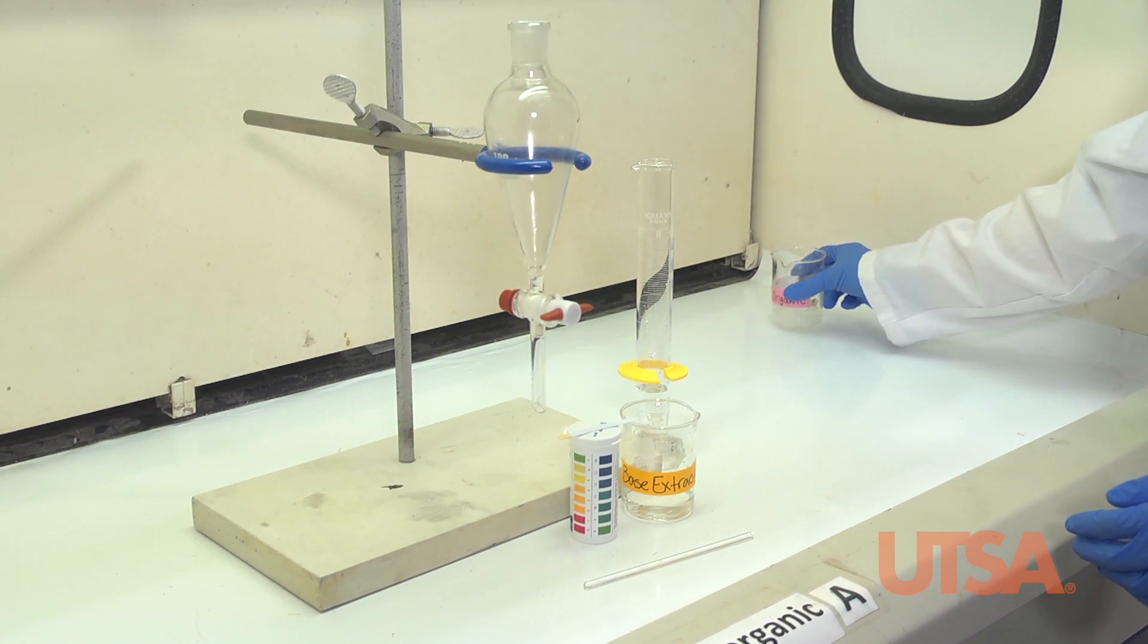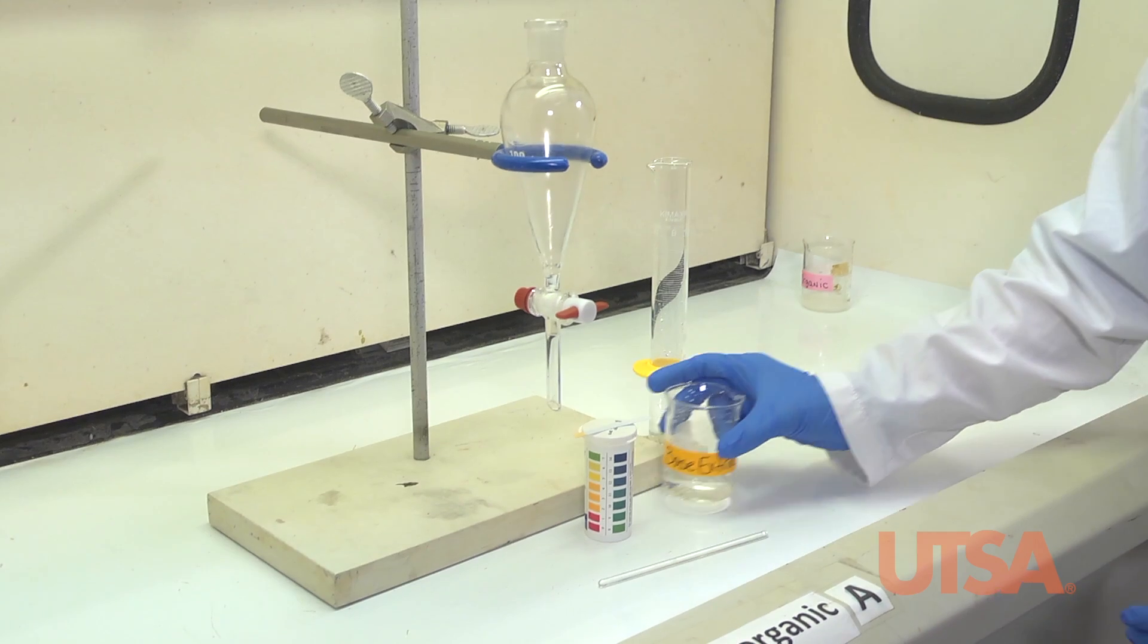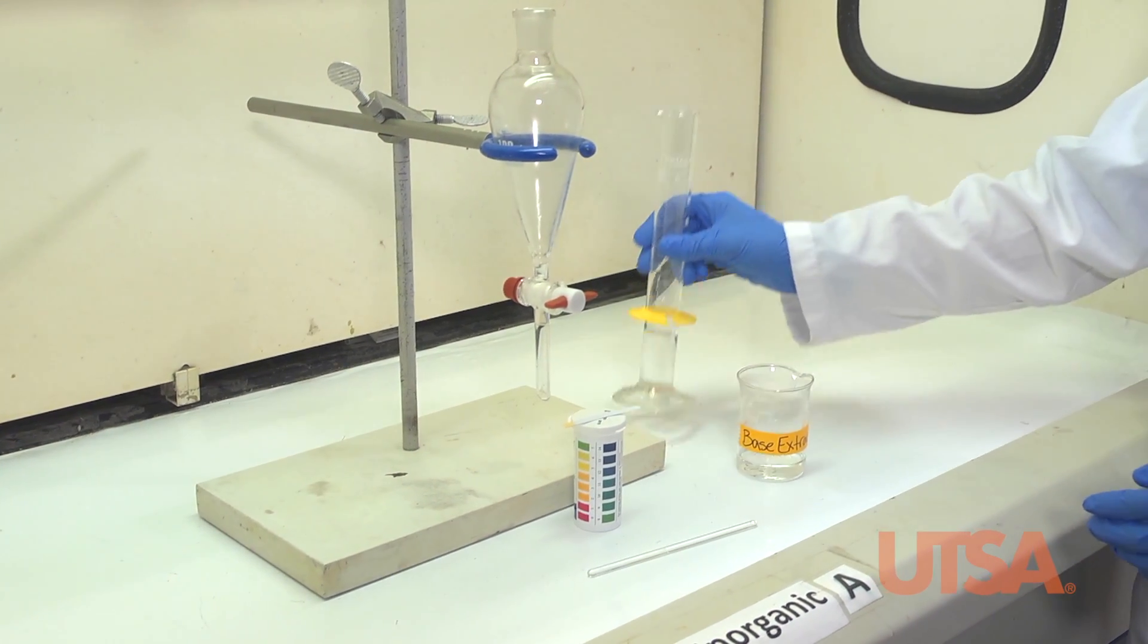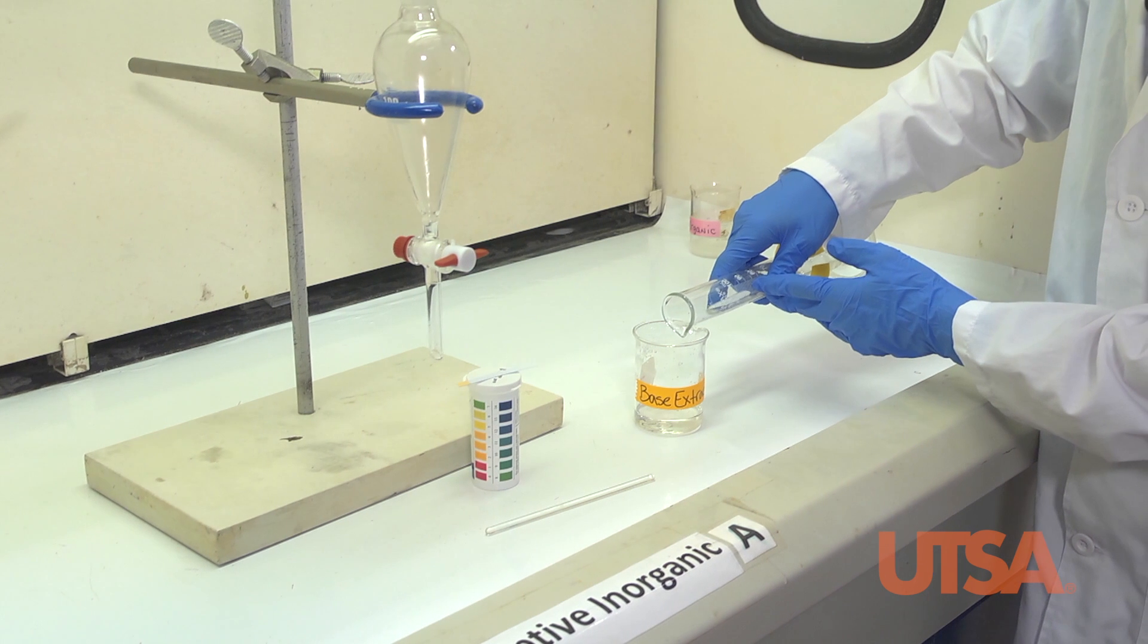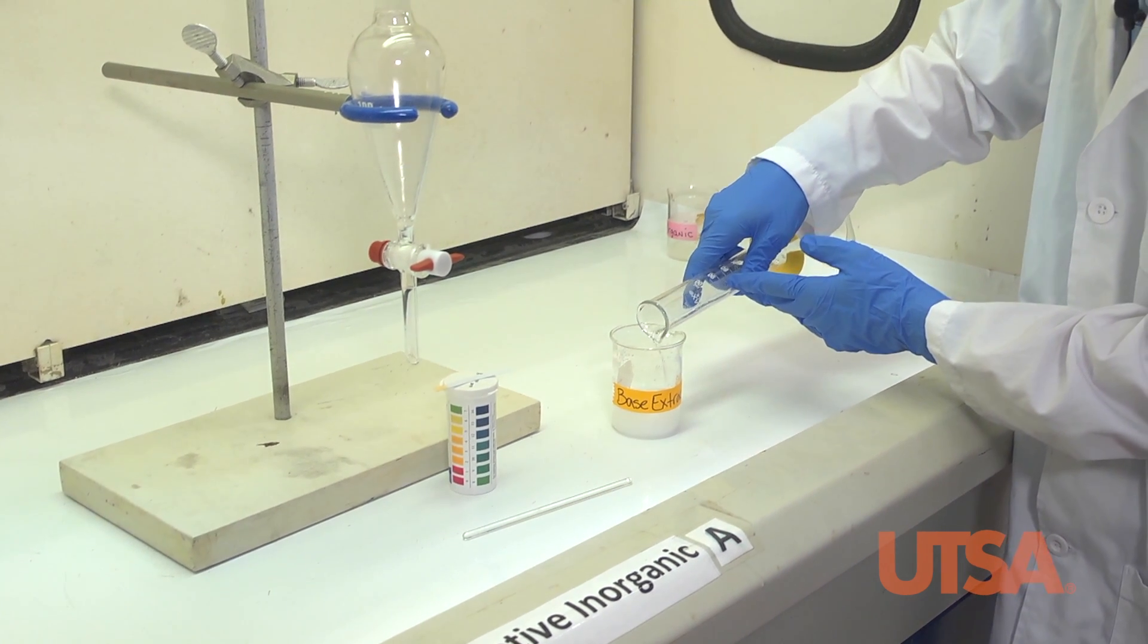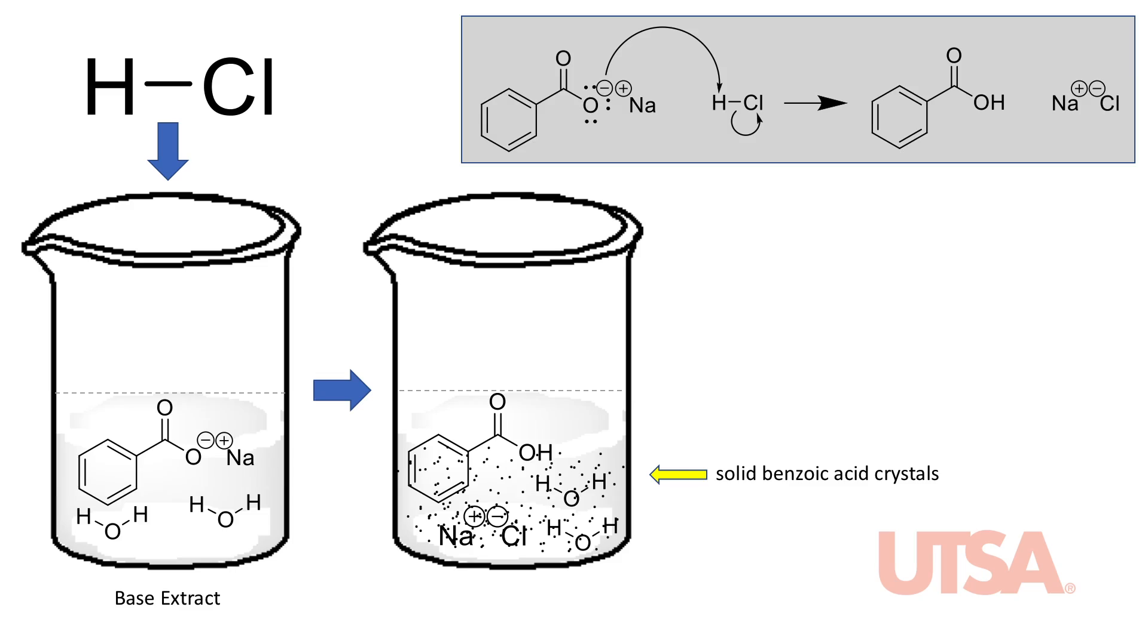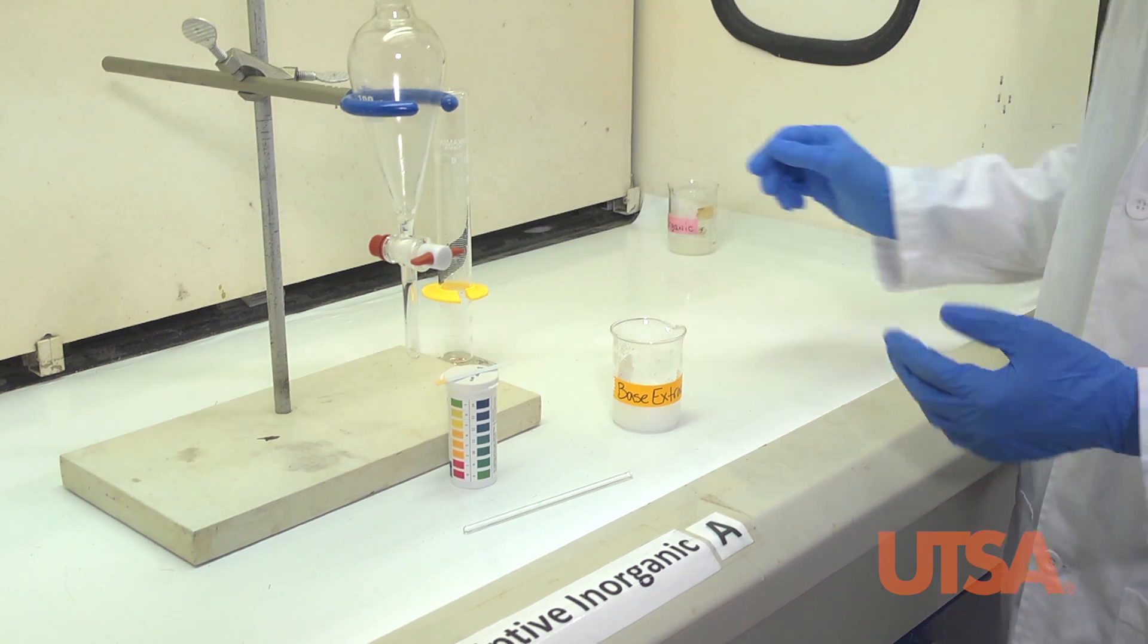We will set the neutral organic aside and neutralize the base extract with 25 mL of 3 molar HCl. The hydrochloric acid will donate a proton to the salt and therefore reform benzoic acid. The resulting compound is no longer soluble in the aqueous layer. You will see the crystals have formed.